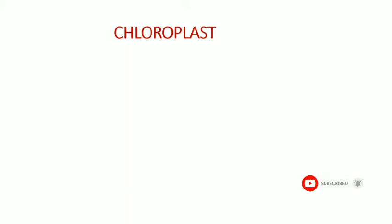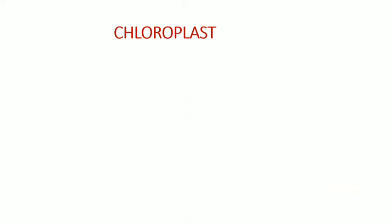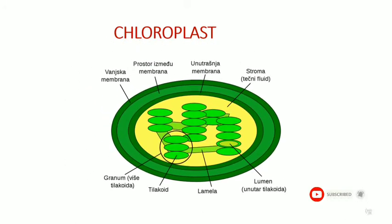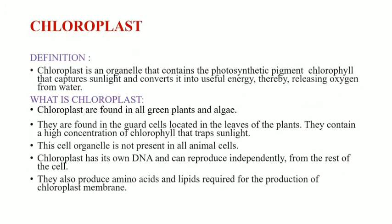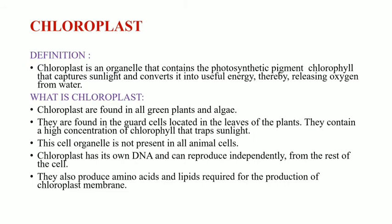Today let us discuss about the chloroplast, the organelle which is used for photosynthesis purposes. Chloroplast is an organelle which contains the photosynthetic pigment called chlorophyll, which captures the sunlight and converts it into useful energy, thereby releasing oxygen in the photosynthetic reaction.